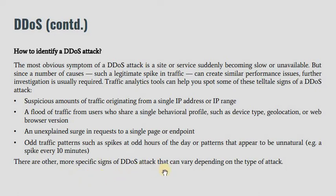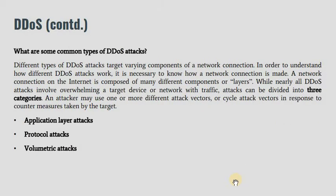There are other more specific signs of DDoS attacks that vary depending on the type of attack. There are various types of DDoS attacks considering the various layers in the OSI model. If we study the various forms of DDoS attacks, we come down to three specific types: application layer attacks, protocol attacks, and volumetric attacks.